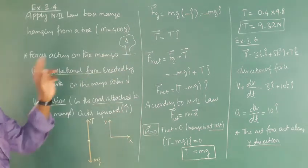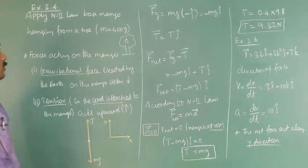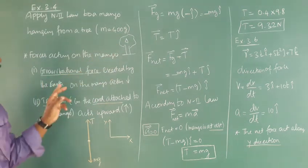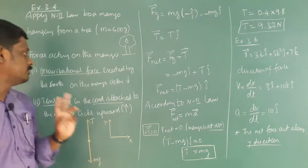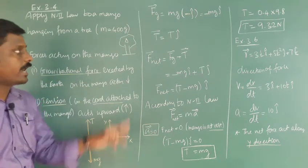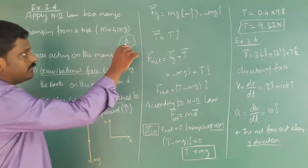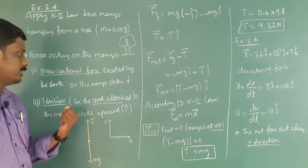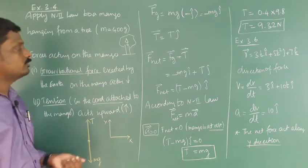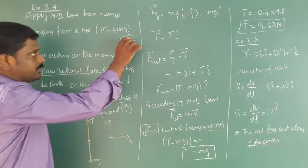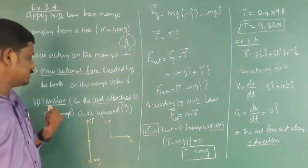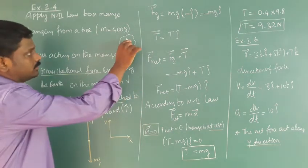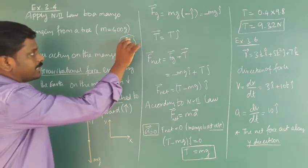What are the forces acting on the mango? First, gravitational force acts downwards. Then there is tension in the cord attached to the mango — the mango is attached to the tree by a cord — and the tension acts upward.